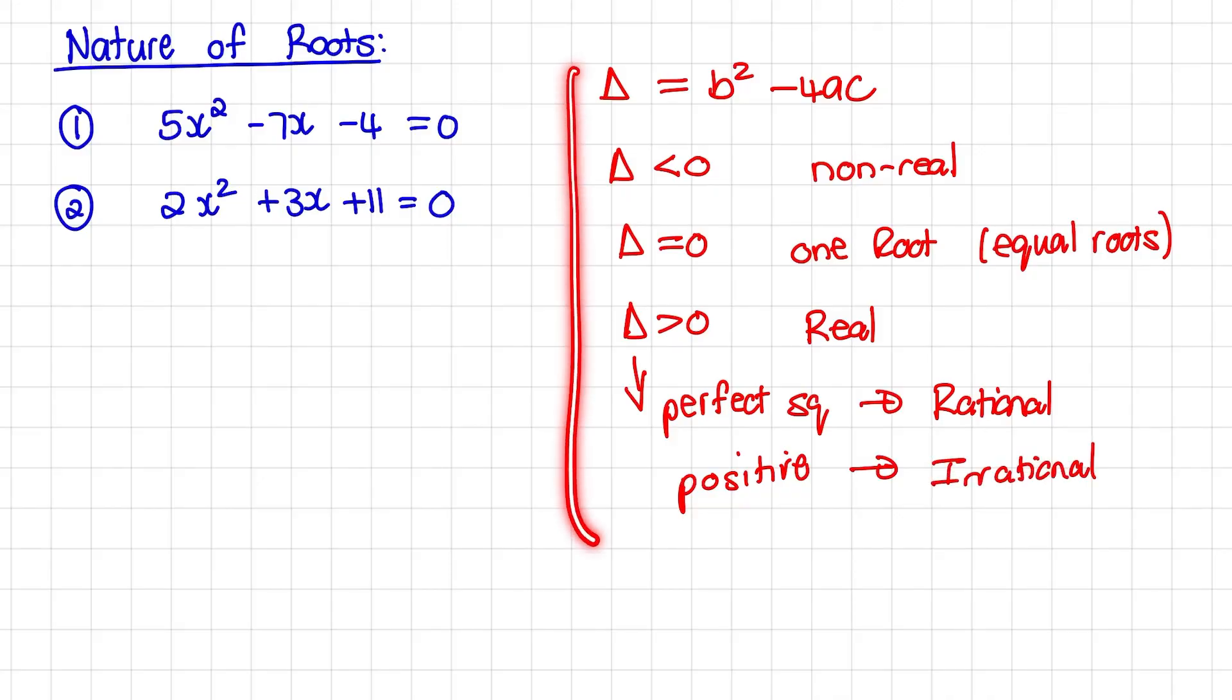So let us use this guide to discuss the nature of roots for these two equations. First, we have 5x squared minus 7x minus 4 equals 0.